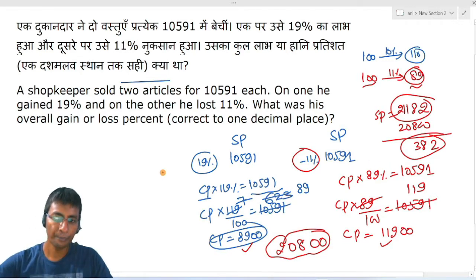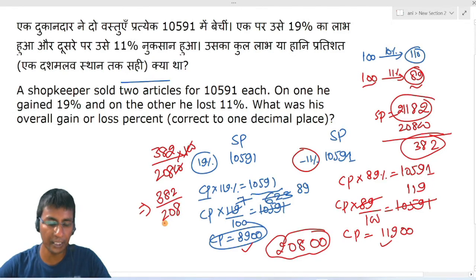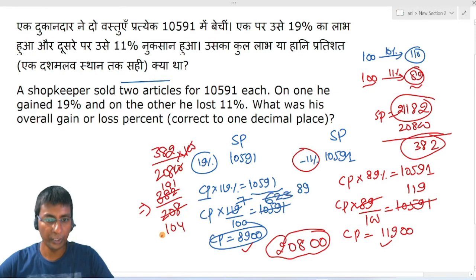Now you have a profit of 382 on 20800. Multiply by 100. 20 and 20 cancel. So ultimately the profit is 382 divided by 208. In percentage form, divide by 2 to get 191 over 104. From here the value is approximately 1.83.